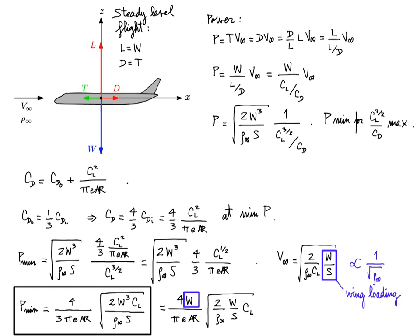And the second point is the strong dependence of power required on weight. So if there's one single thing that you can do when you design an aircraft to reduce the power, it's reduce the weight. Something else you can do is increase the aspect ratio.